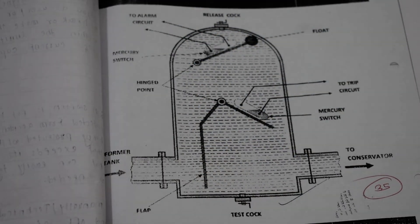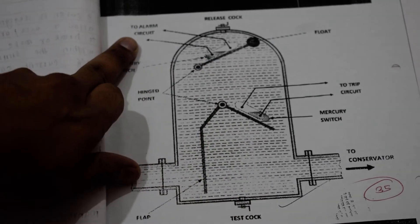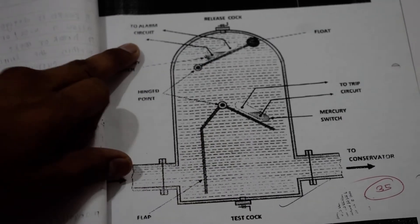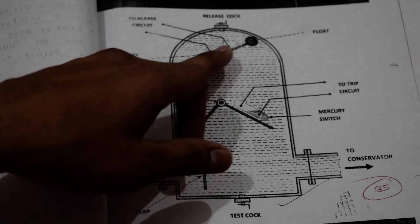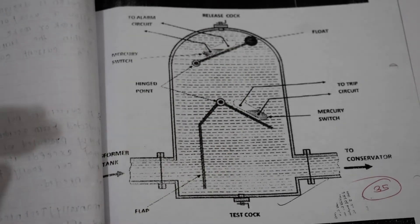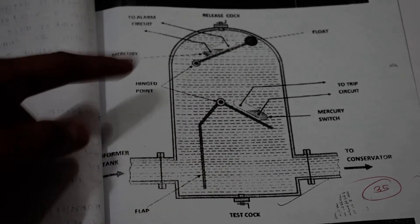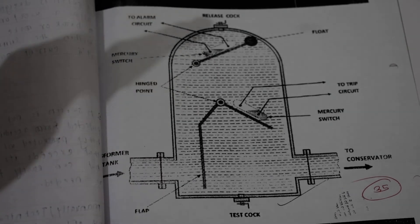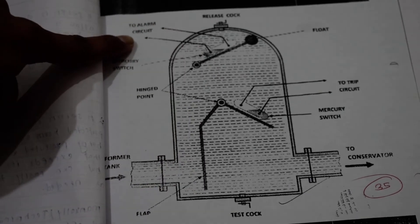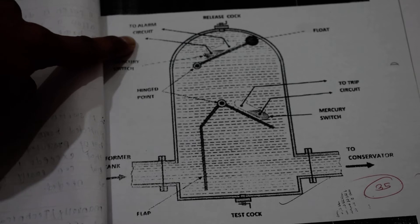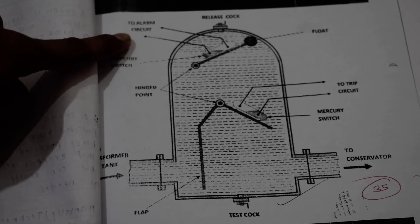This has an alarm circuit, which is a normally closed circuit. As the vapors flow and strike the float, the alarm will operate. This happens when there are small faults. Sometimes the transformer has very big faults because of the oil.